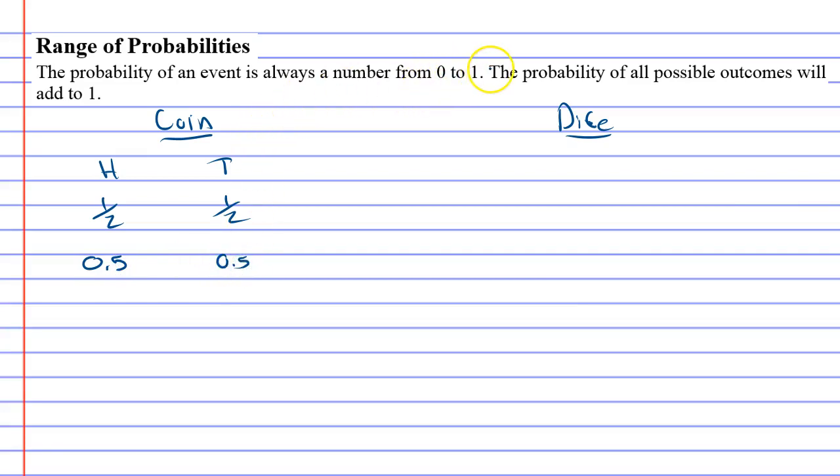which is a number from 0 to 1. And all probabilities will be between these two numbers. Now the next part of the sentence is the probability of all possible outcomes will add to 1.